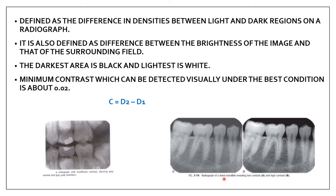Here is an example showing the difference in contrast. This one is having low contrast and this film is having high contrast. High contrast is when it appears more black and white, and low contrast is when you see the image having more of a grayish color. The minimum contrast which can be detected visually under the best conditions is about 0.02. The formula for contrast is C = D2 minus D1.